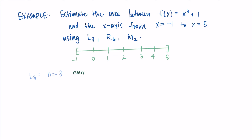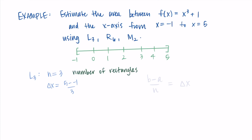For L3, n = 3 is our number of rectangles. Then Δx is the width of each rectangle: (b - a)/n = (5 - (-1))/3 = 6/3 = 2. So the width of each rectangle is 2 and we have three of them. You might just be able to tell by looking at the interval — to fit three rectangles from -1 to 5 with equal widths, each needs a width of 2.